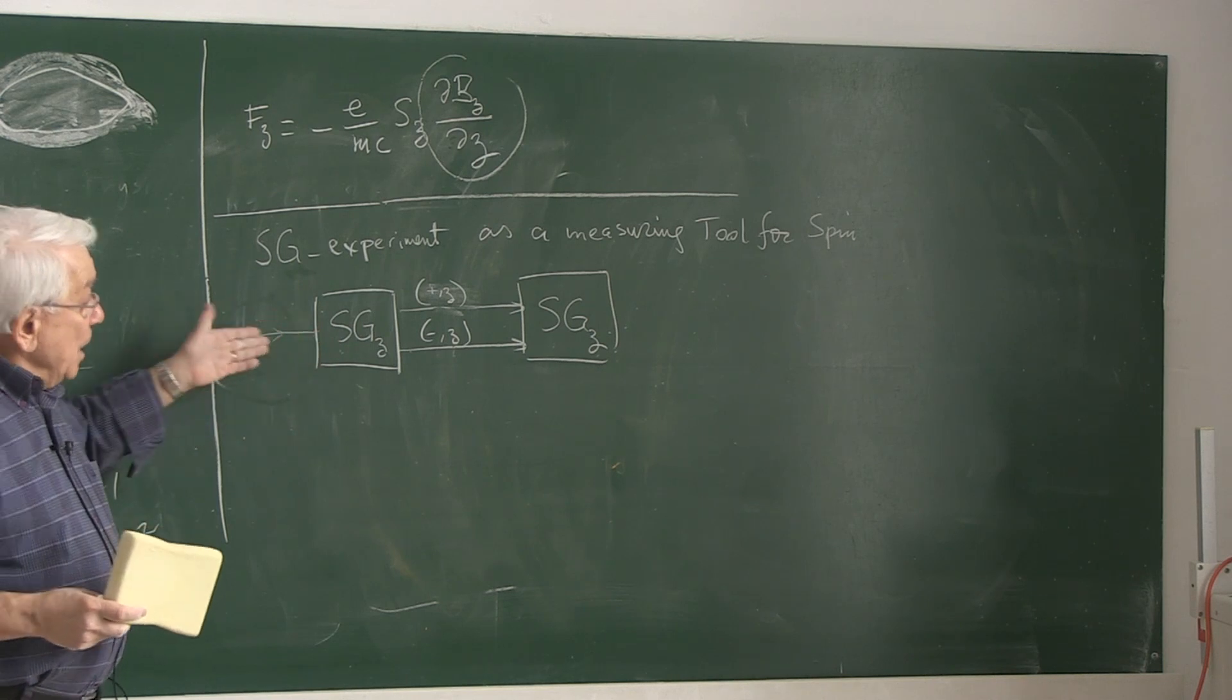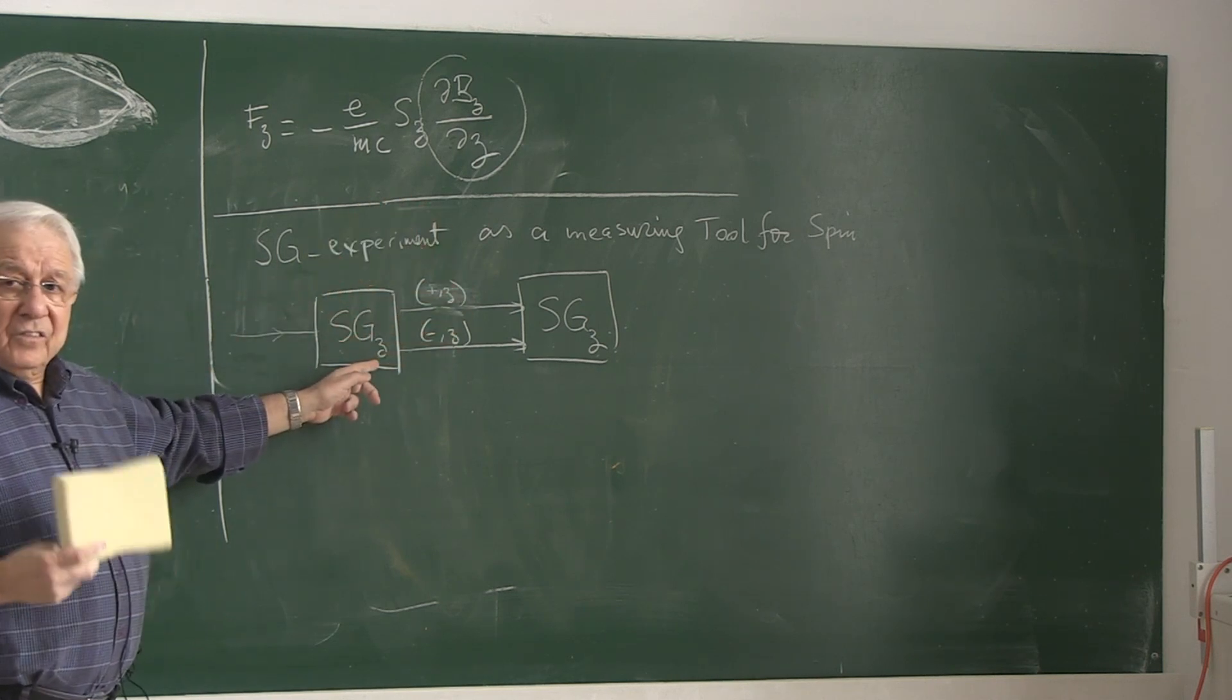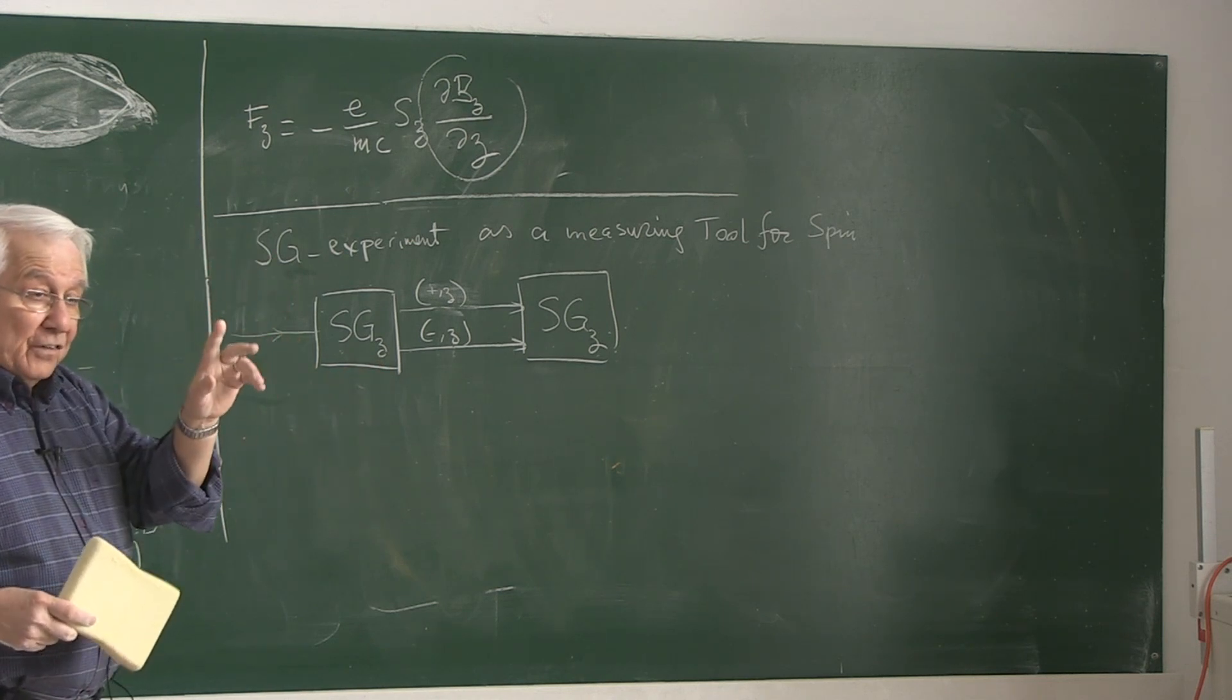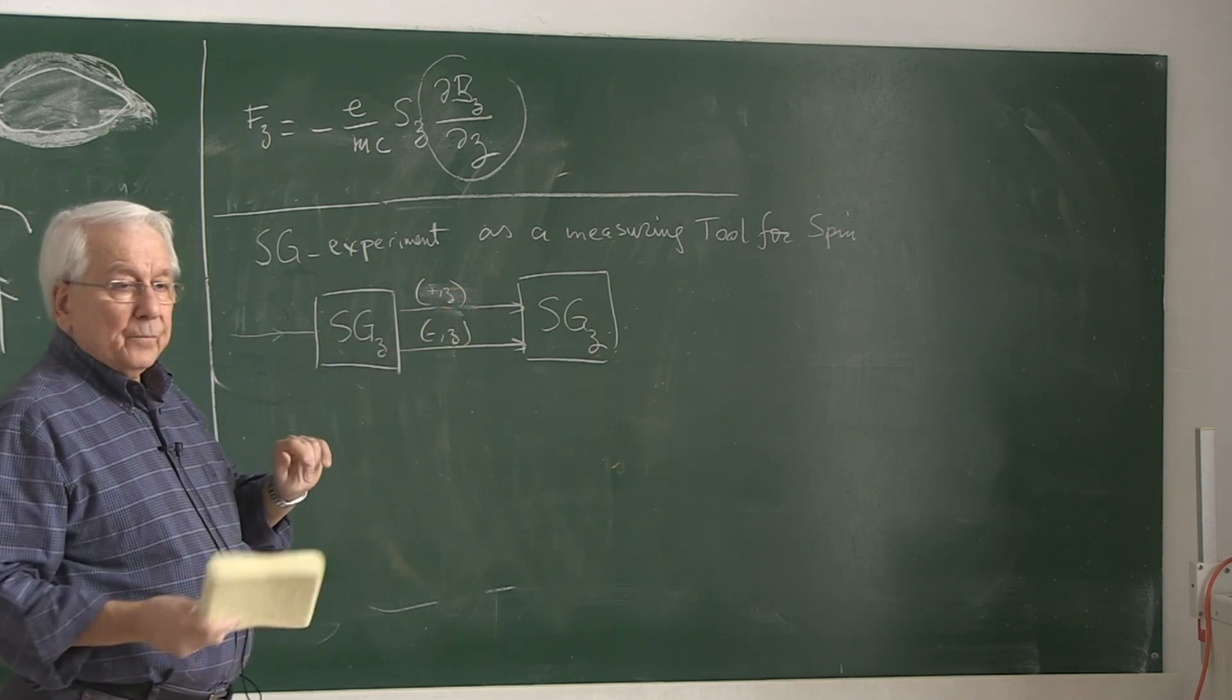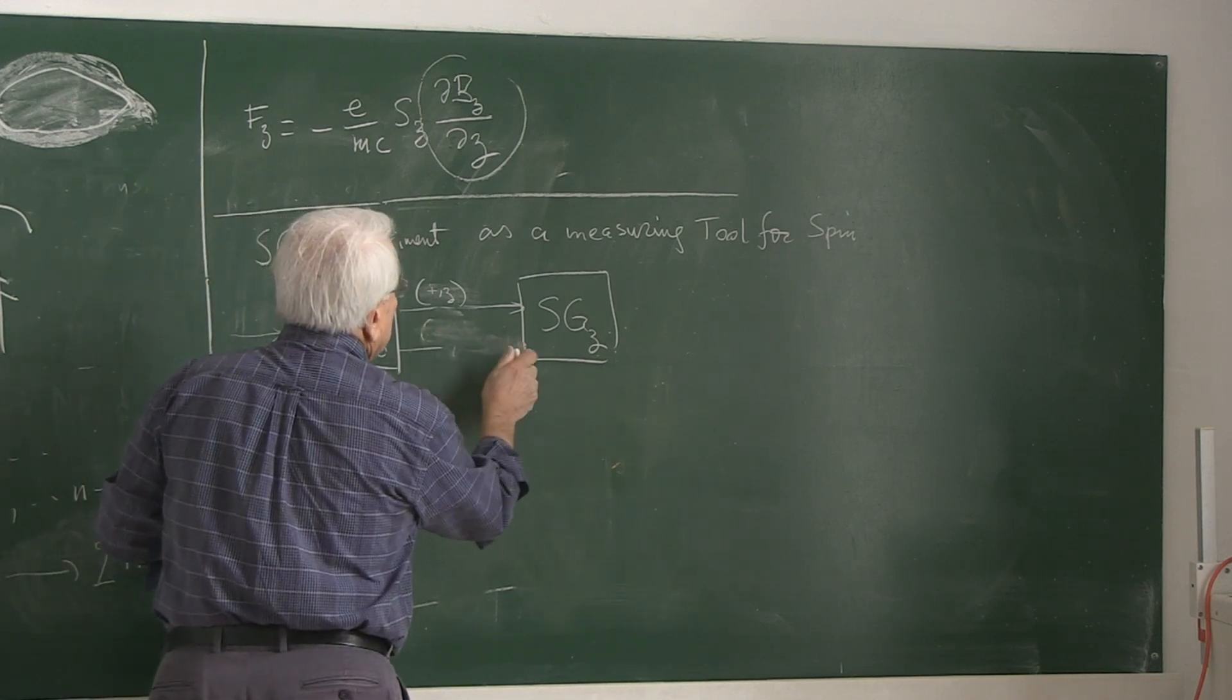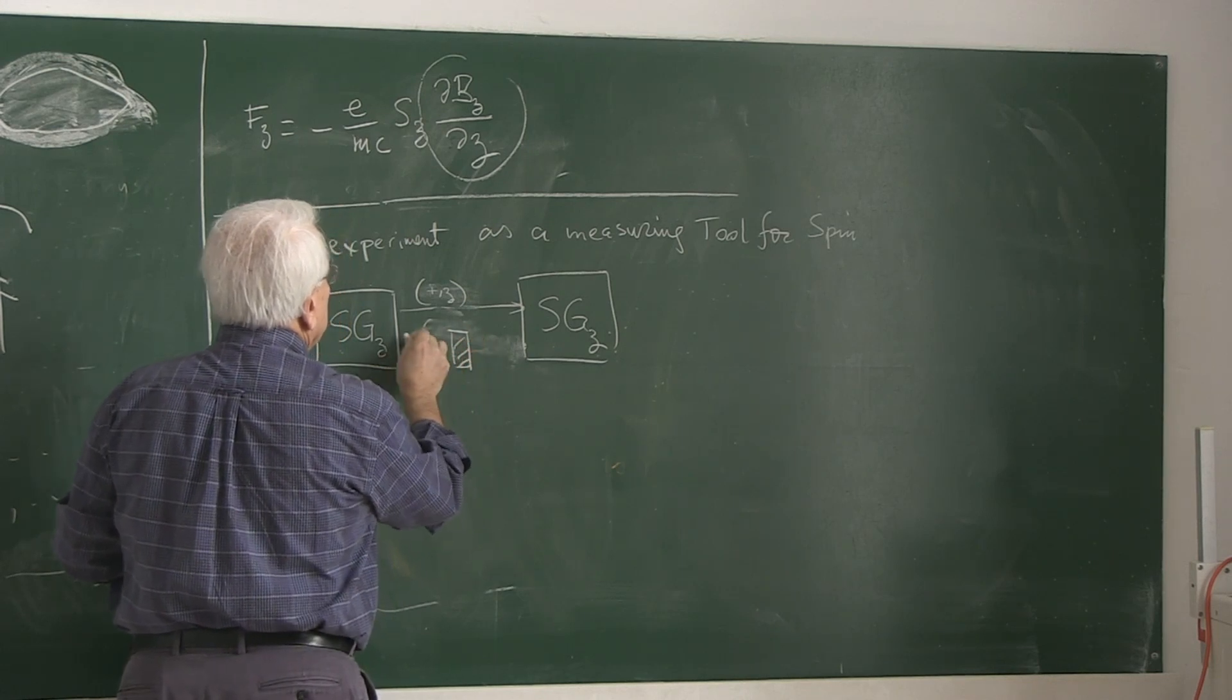When they come out, they are sent through this Stern-Gerlach Z gadget. That's magnetic field gradient in the Z direction. It splits the beam in the Z direction. Half of it goes through with the spin-up. Half of it goes through with the spin-down. But the nice thing about this gadgetry for the setting of the foundation, you block the lower one.